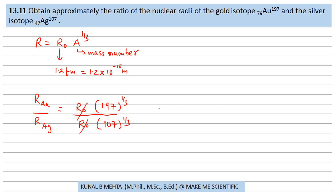So, anyhow these two are getting cancelled. So, you have 197 divided by 107 whole raised to 1 by 3.